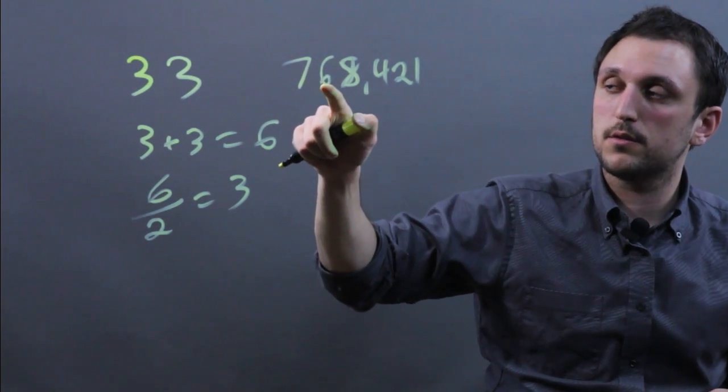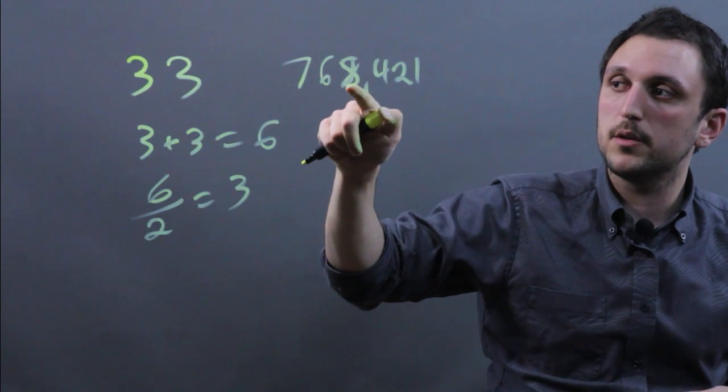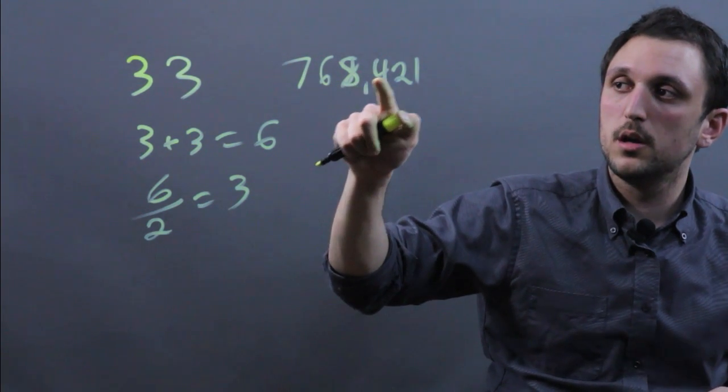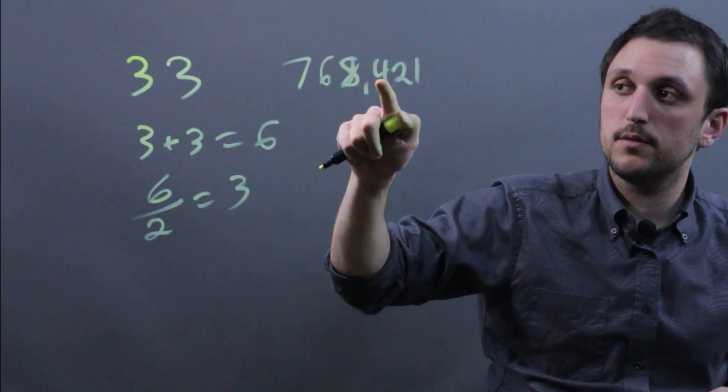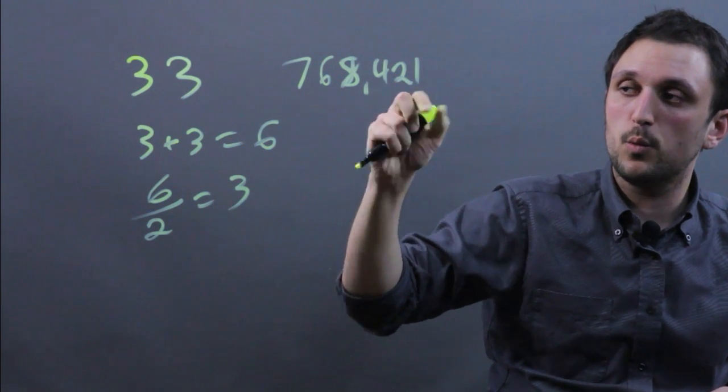So 7 plus 6 is 13, plus 8 is 21, plus 4 is 25, plus 2 is 27, plus 1 is 28.